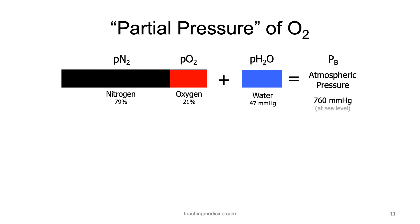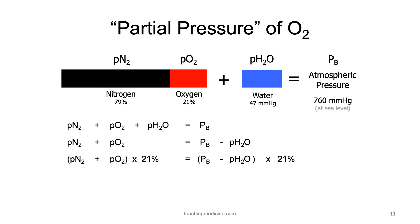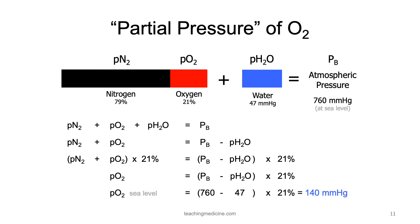The pressure of nitrogen plus the pressure of oxygen plus the pressure of water must equal the atmospheric pressure. If we rearrange this equation, we can move the water over to the other side: the partial pressure of nitrogen plus oxygen equals the barometric pressure minus the pressure of water. We know that the partial pressure of nitrogen and oxygen times 21% gives us the partial pressure of oxygen. Solving this equation, at sea level the partial pressure of oxygen is 140 millimeters of mercury.